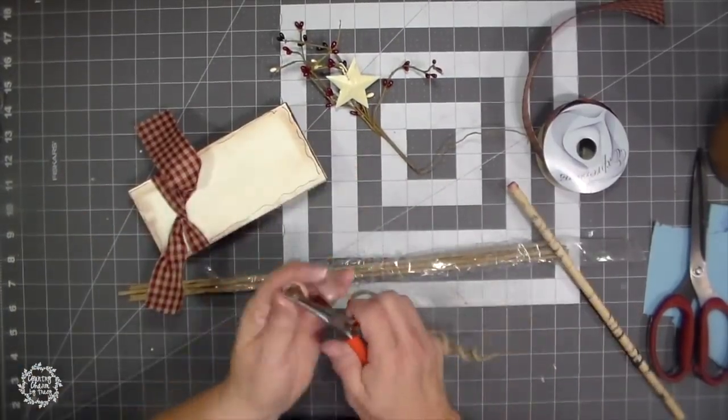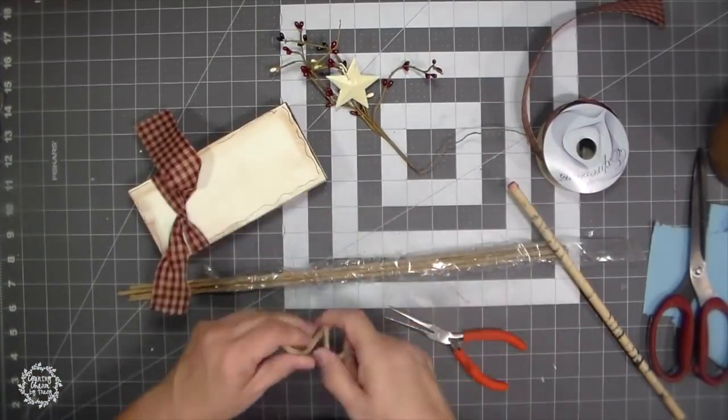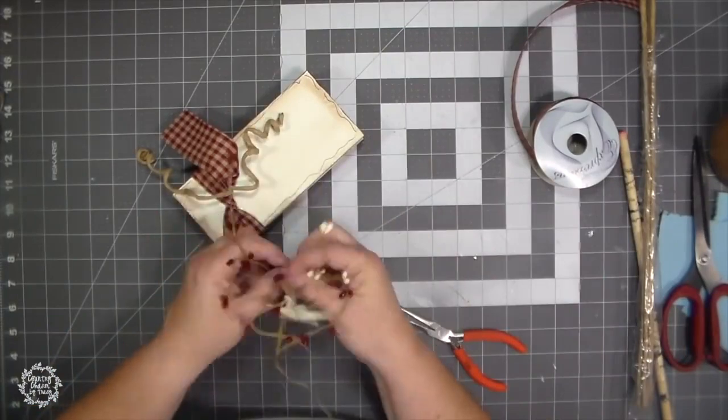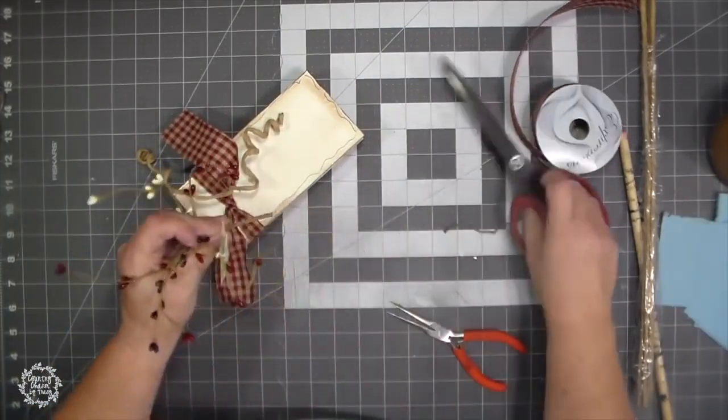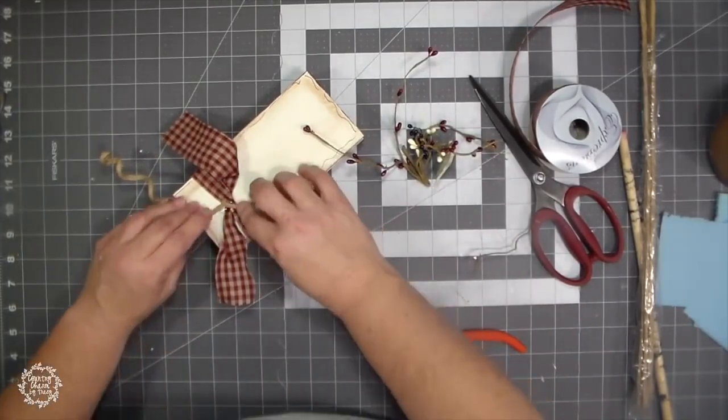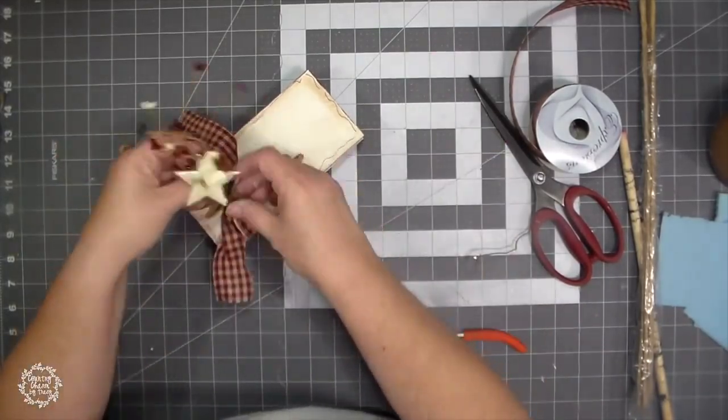So I just folded it in half so that it wouldn't be quite as wide and then now I am just using some paper colored wire and I twisted it around a dowel just to give it a curly cue effect.